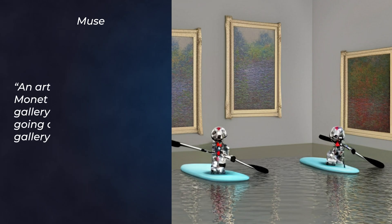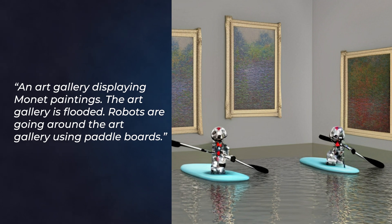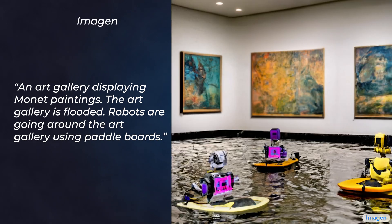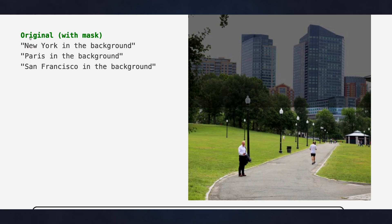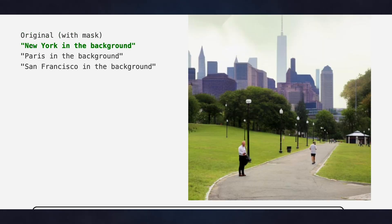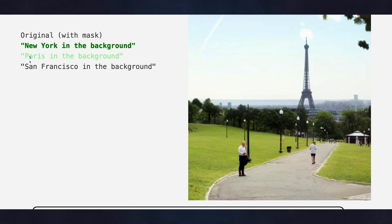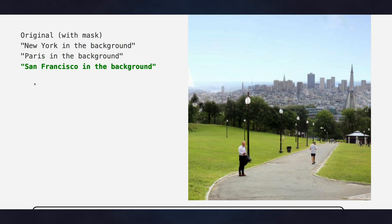The image quality is not as good as Imagen and Midjourney, but this model has unique capabilities. Let's see what it can do when we edit an image with a masking area. Here we're masking the upper half of this image — we can have San Francisco in the background, or New York, or Paris.